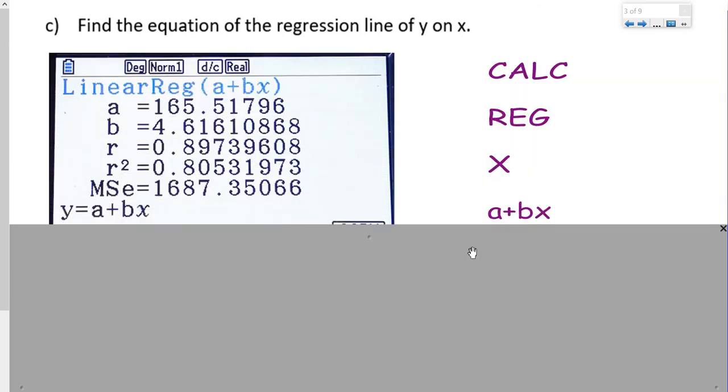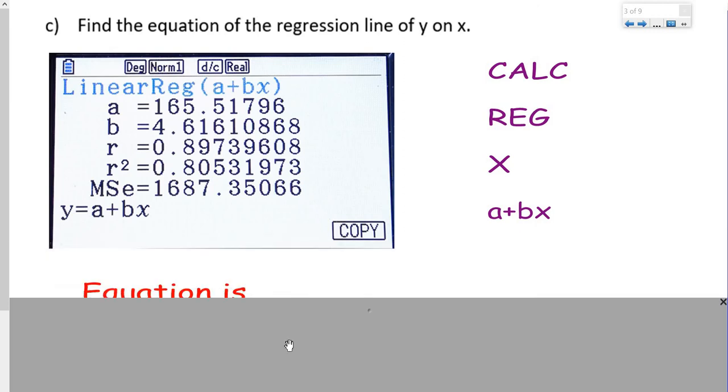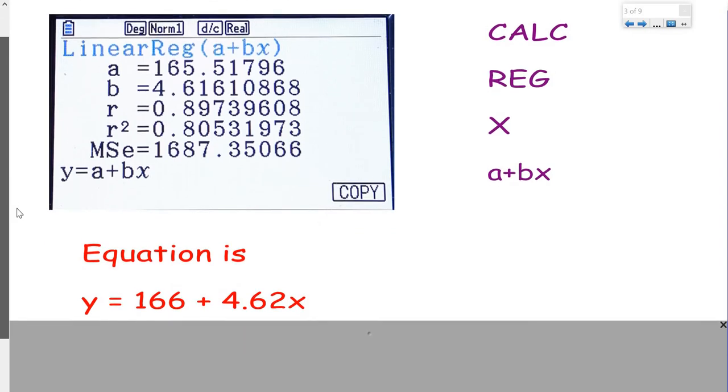Again, using those same buttons, finding that same screen again, using the values of a and b for the equation. Now that's with it rounded to three significant figures.